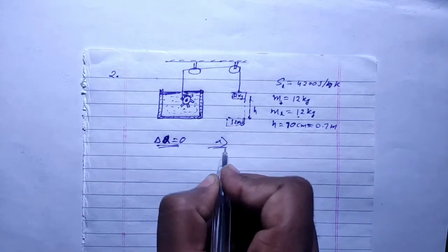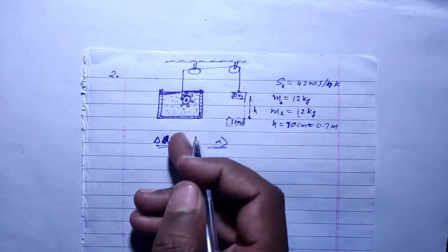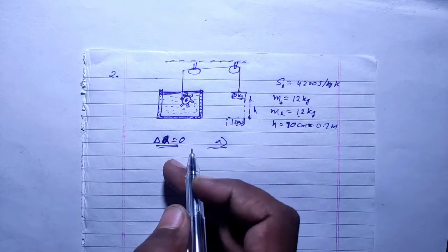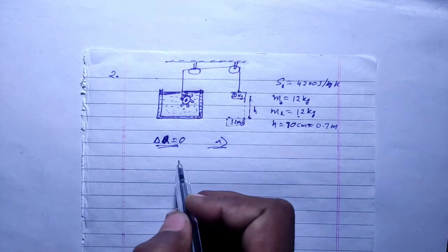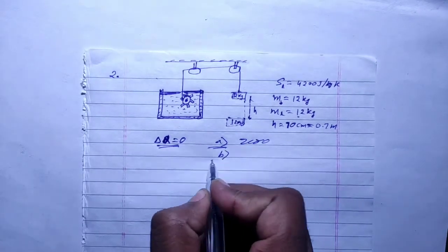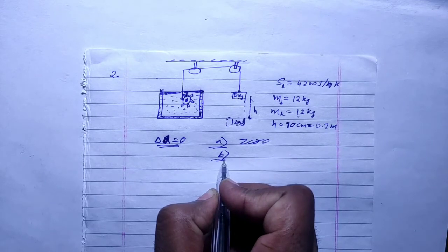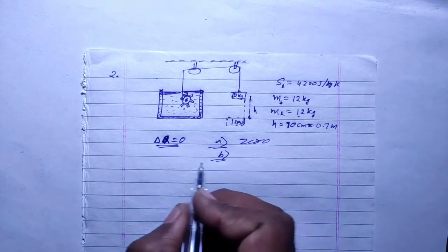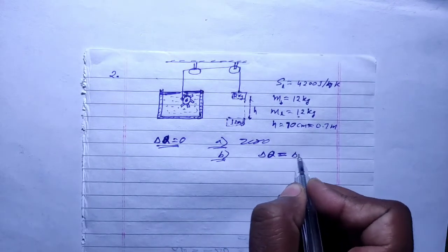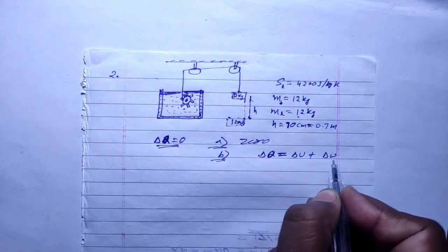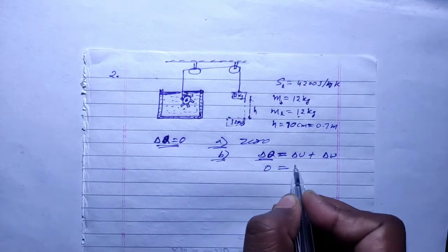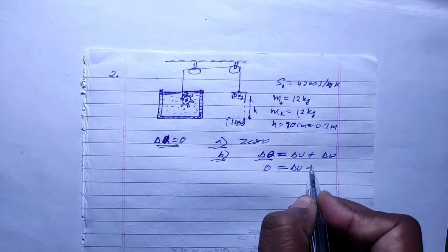How much heat is given to the liquid? Then the heat given to the liquid? The first law says that heat is equal to change in internal energy plus work done. Heat supplied is zero, so internal energy is equal to plus work done. Work done is equal to negative of internal energy.